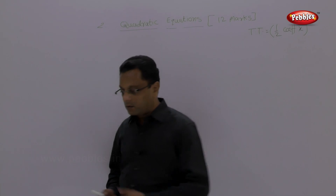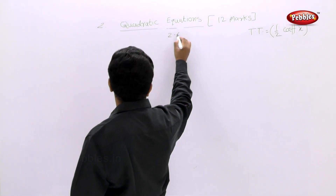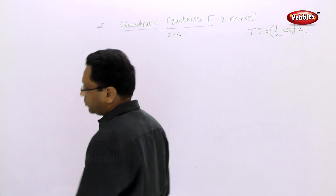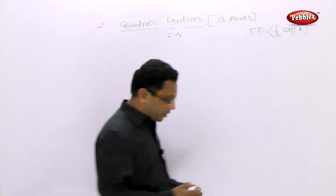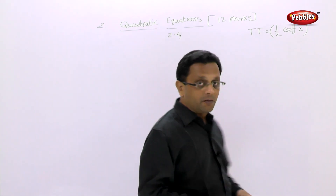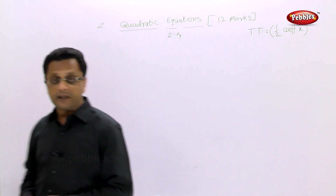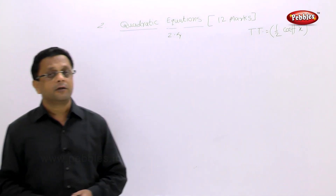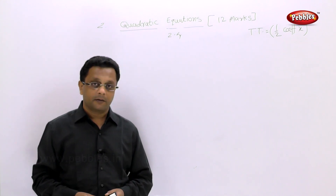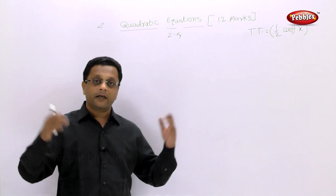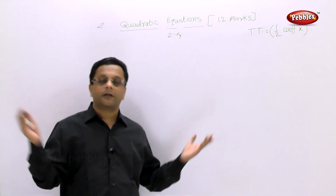Let us solve exercise 2.4: solving quadratic equations by completing the square method. We will make the left-hand side a complete square, then take the square roots of both sides and equate.